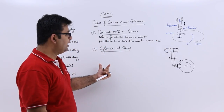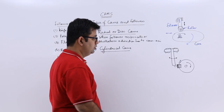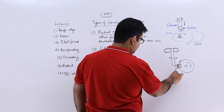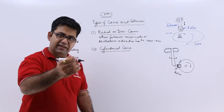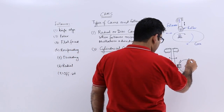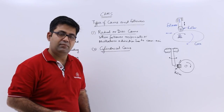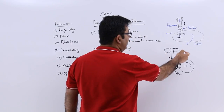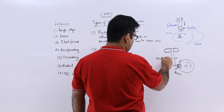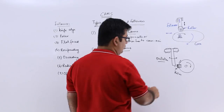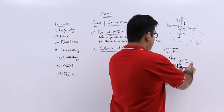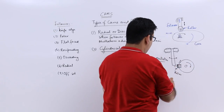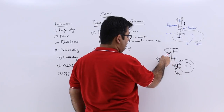Similarly, the cylindrical cam looks like this — this is the cam and this is a roller. As the cam rotates, this roller moves on the periphery of this cam. Because it moves on the periphery, this follower oscillates — so this is an oscillatory motion. This roller starts to rotate along this cylindrical piece, and the follower starts oscillating like this.